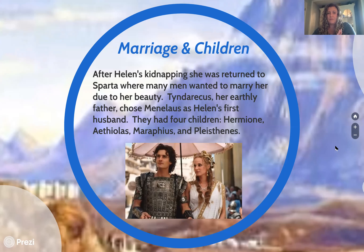Many people wanted to marry her — she was essentially the bachelorette. Her earthly father Tyndareus chose Menelaus, who was a popular and prominent figure at the time. They had four children together. Menelaus, her first husband, is the one who ultimately started the Trojan War.